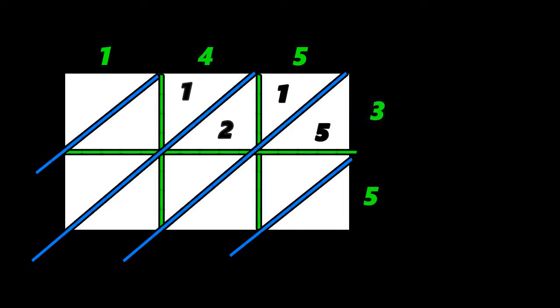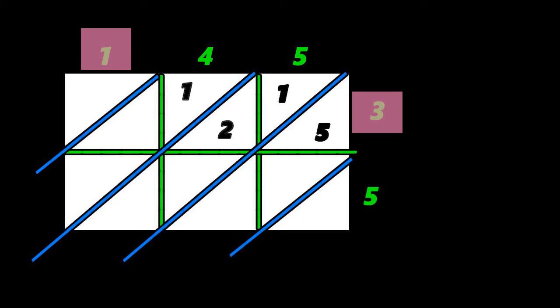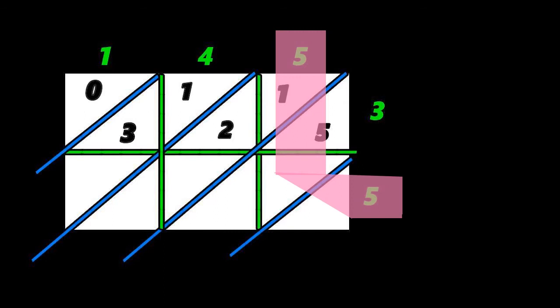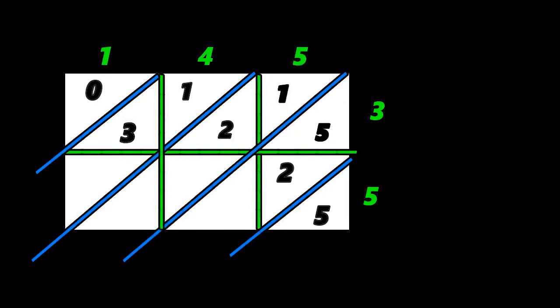We are going to multiply three times one — three. So, we will write zero here, and then three here. Another digit of our multiplier, which is five. Five times five — twenty-five. So, we will write it here: two and then five.